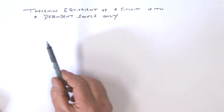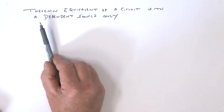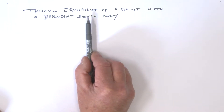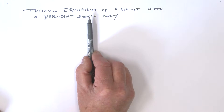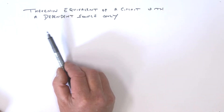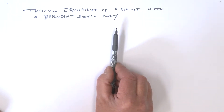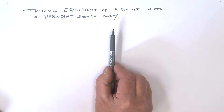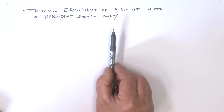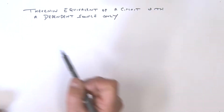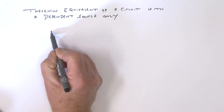Hello again. What I'd like to talk to you about today is how do we find the Thévenin equivalent of a circuit that really only has a dependent source. We've looked at circuits with independent sources, and circuits with dependent and independent sources, so let's see if we can have a look at this case.